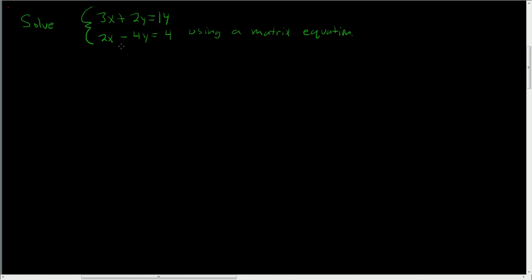The first matrix we're going to come up with comes from the coefficients of the equations. So people call it the coefficient matrix. We usually call that A. So 3, 2, 2, negative 4.